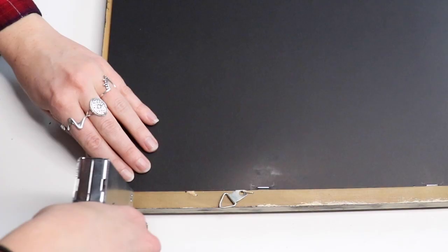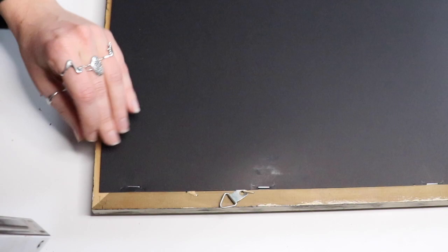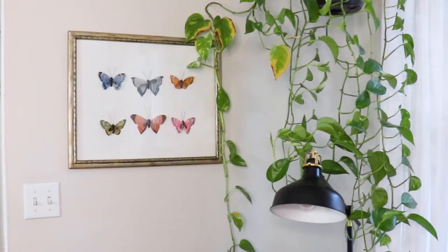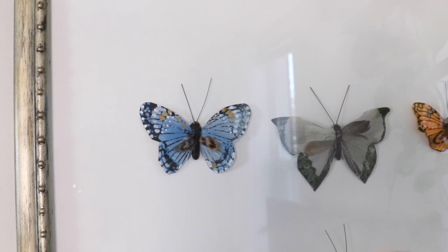All I did was take a piece of poster board, cut it down to size, and then I stapled it to the back. So that allows for, depending on the frame, a couple of centimeters, maybe like half an inch of room for those butterflies to kind of be in a mock shadow box that we've created here.